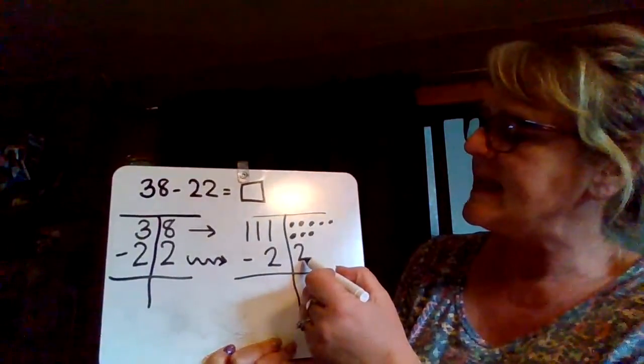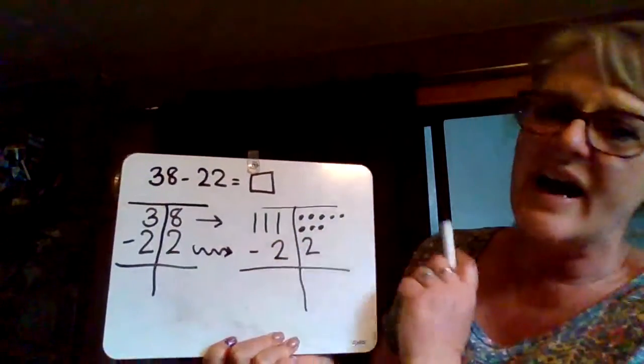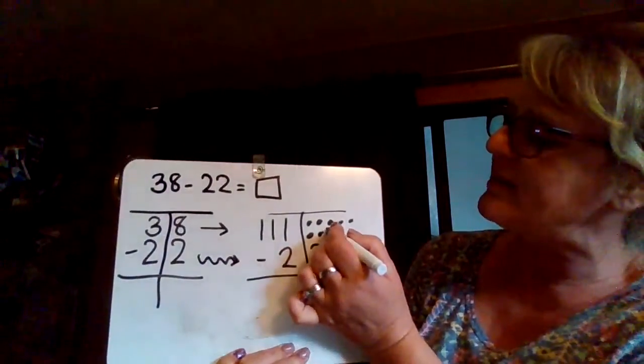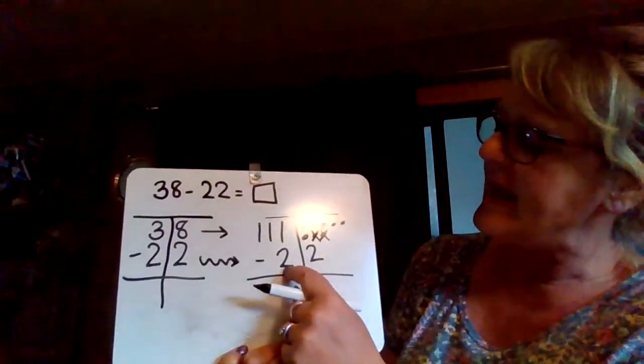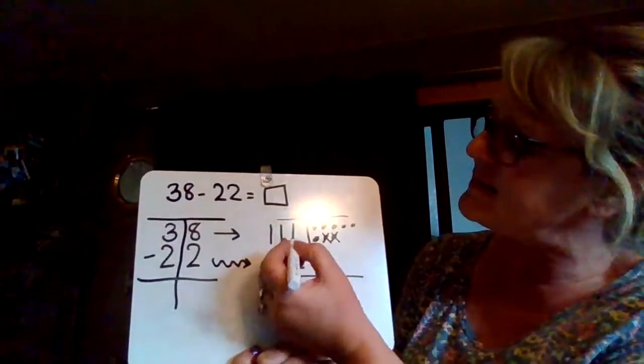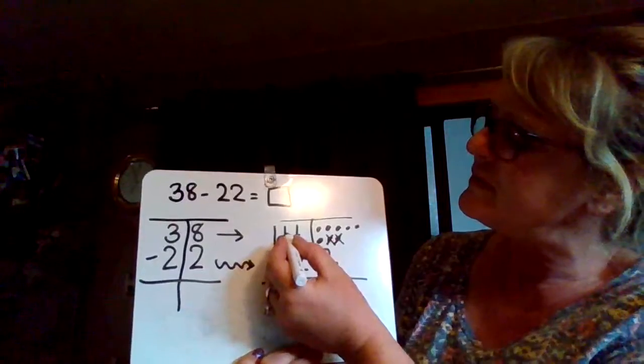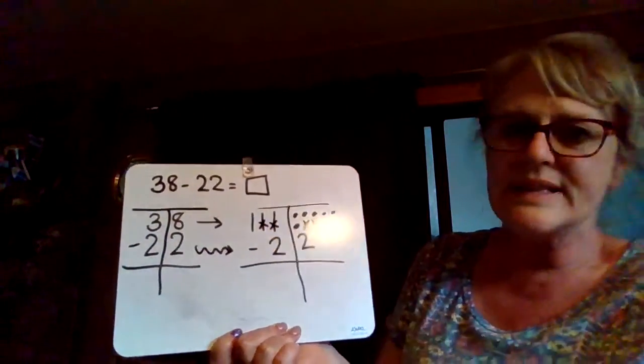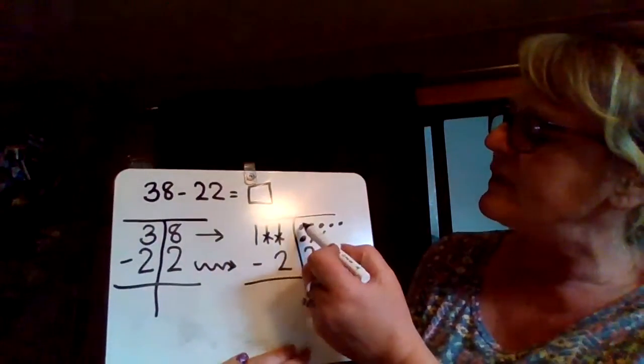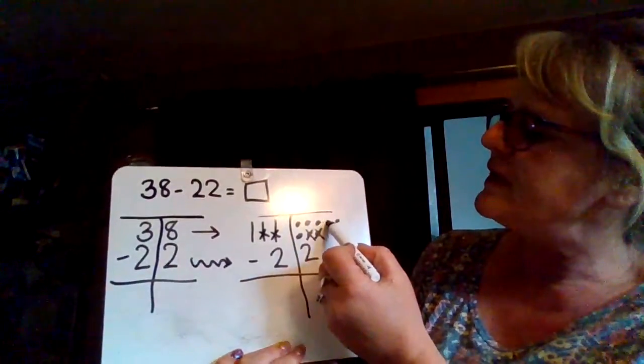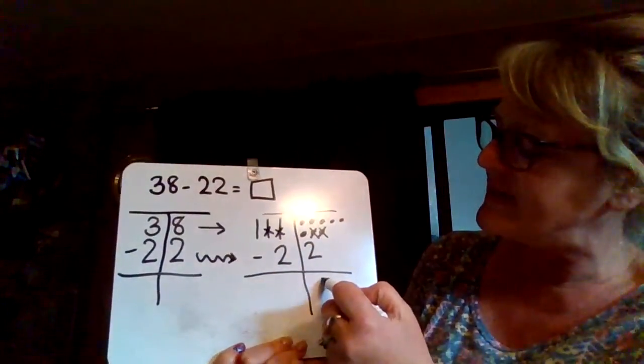Now here we're going to take away 2. Oh look, I have more than 2 - that's going to be easy. [crosses out] 1, 2. And I'm going to take away 2 tens: 1, 2. So let's figure out the answer to 38 take away 22. [counting what's left] 1, 2, 3, 4, 5, 6. I have 6 left.